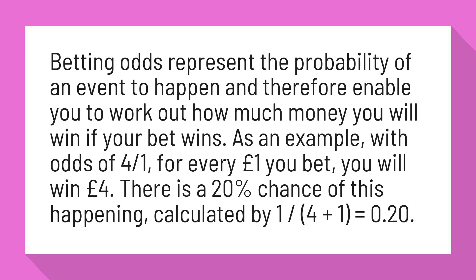As an example, with odds of 4/1, for every 1 pound you bet, you will win 4 pounds. There is a 20% chance of this happening, calculated by 1 divided by (4 plus 1) equals 0.20.